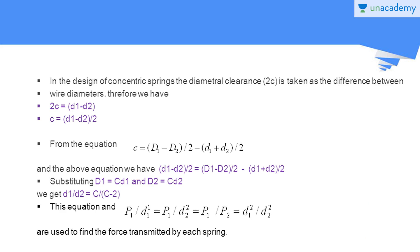In the design of concentric springs, the diametral clearance 2c is taken as the difference between wire diameters. Therefore 2c = d₁ − d₂, giving c = (d₁ − d₂)/2. Substituting d₁ = c·D₁ and d₂ = c·D₂ (where c is the spring index, equal for both springs) into the clearance equation, we obtain D₁/D₂ = (c + 2)/(c − 2)... wait — solving correctly gives d₁/d₂ = (c + 2)/(c − 2) ... the relation simplifies to D₁/D₂ = c/(c − 2).